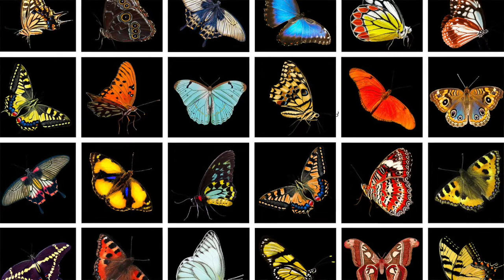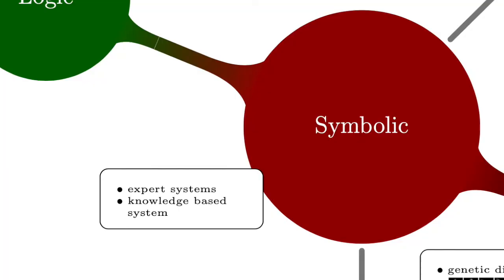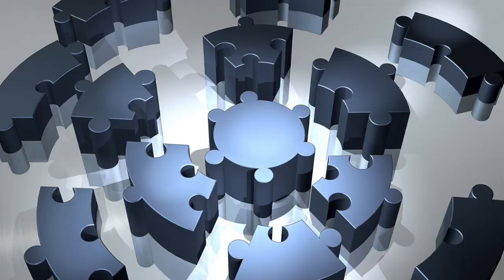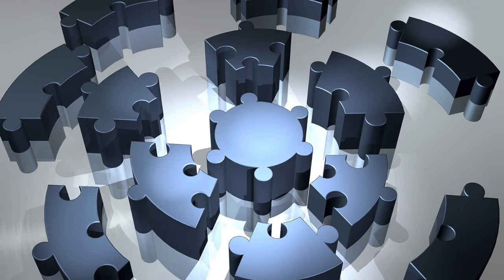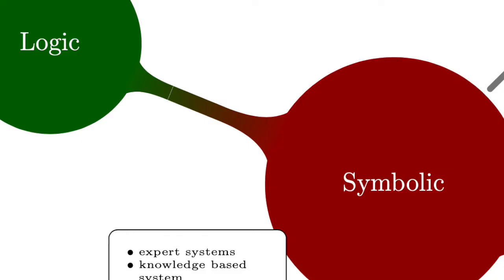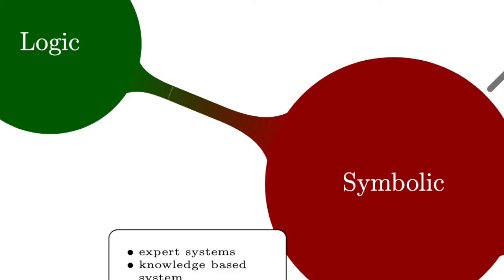That brings us to the last point on our poster: symbolic AI. It tries to simulate intelligence on a higher level, namely on the level of logic. The knowledge is formulated here as closely as possible to human knowledge and language, with logical connections, so that a logical conclusion can be automatically derived. So-called ontologies are used for knowledge representation, which contain a linguistically formulated and formally ordered representation of a set of terms and the relationships between them. These ontologies, or the knowledge they contain, can focus on a certain domain. These systems are often called expert systems.